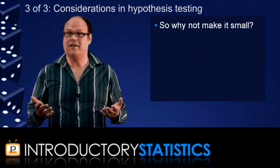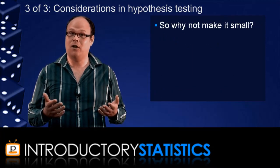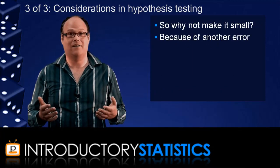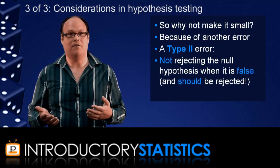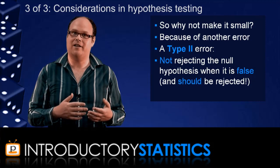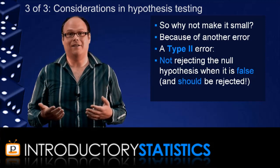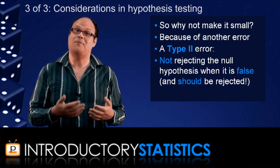So, why not make alpha as small as possible? Well, because there is actually another kind of error, a type 2 error. This is the error of not rejecting the null hypothesis when it's false and should be rejected. And the lower you make alpha, unfortunately, the more likely this type 2 error becomes. The probability of committing a type 2 error is denoted beta.